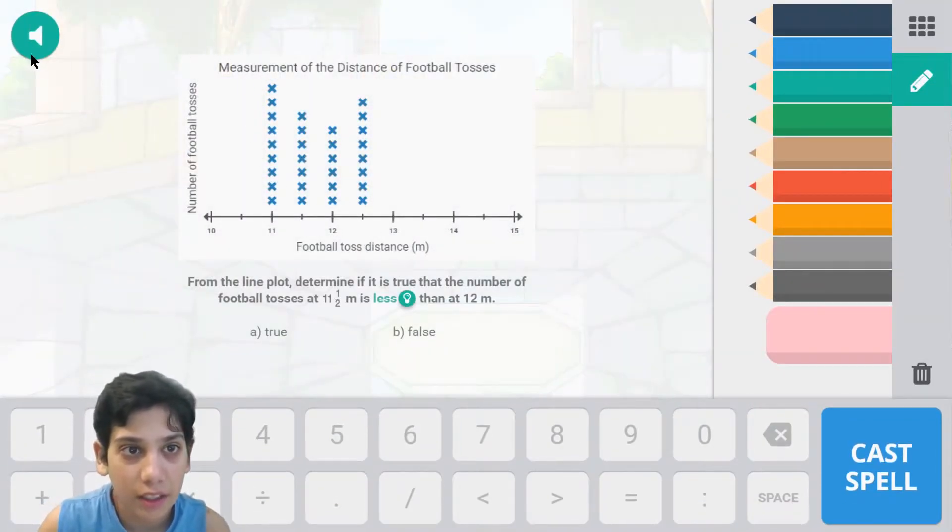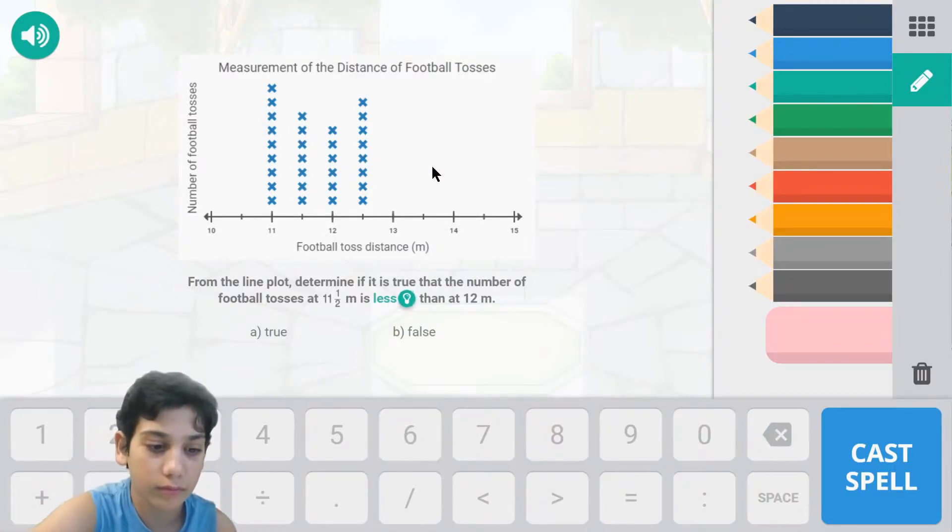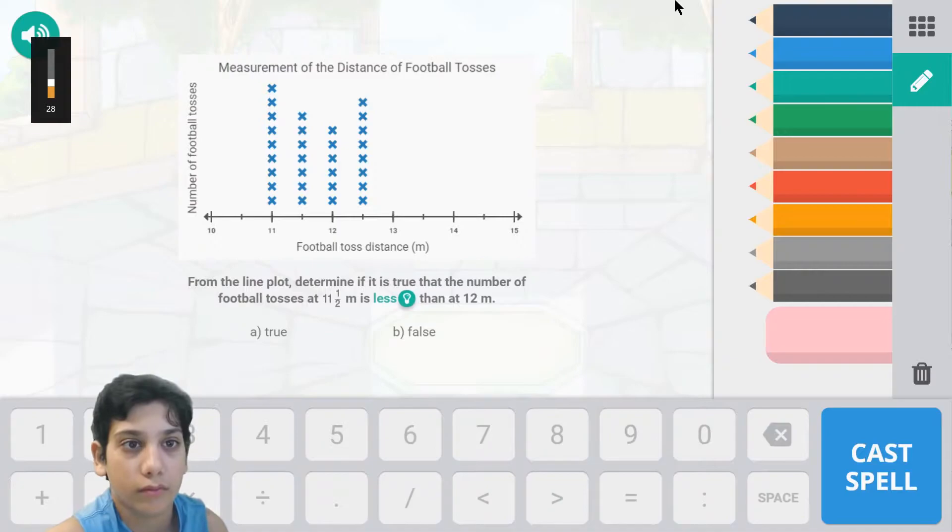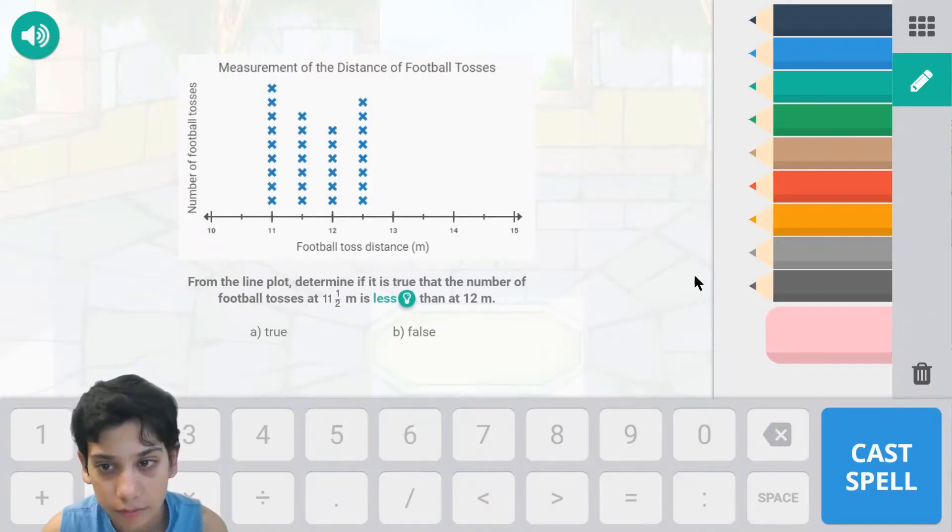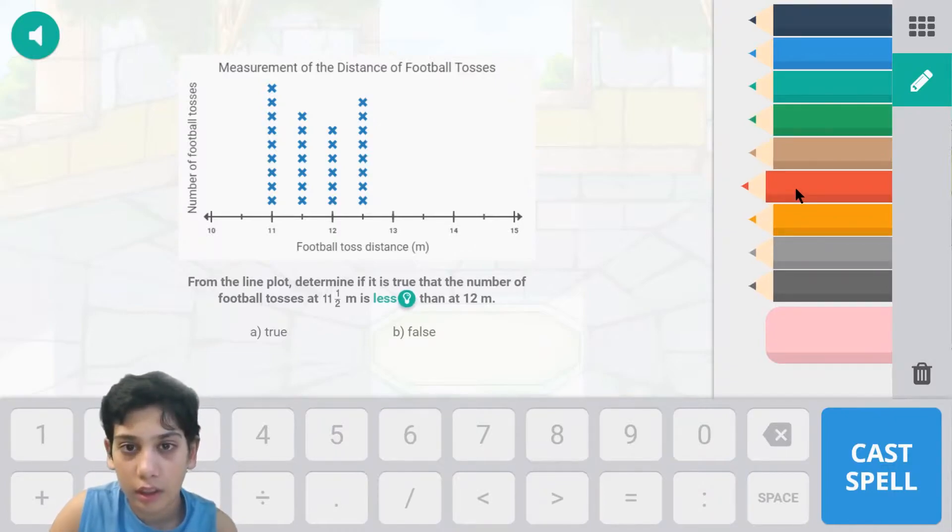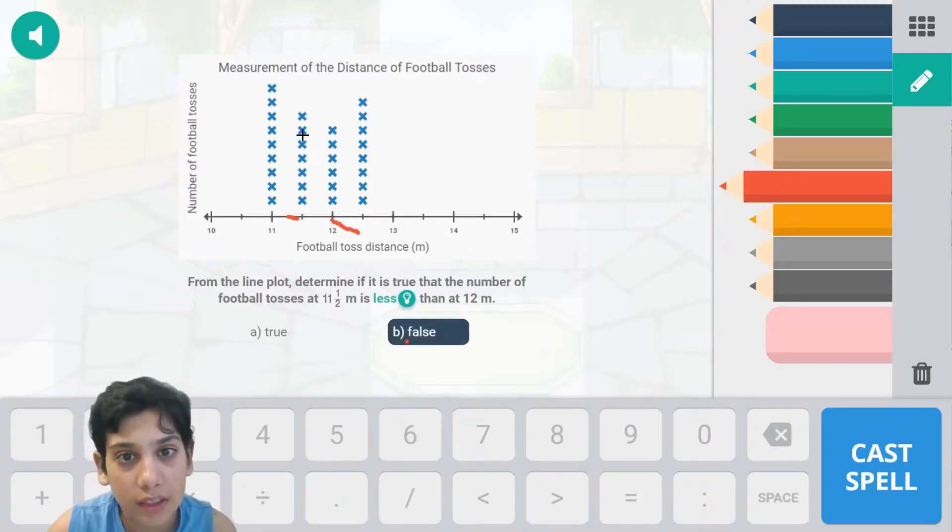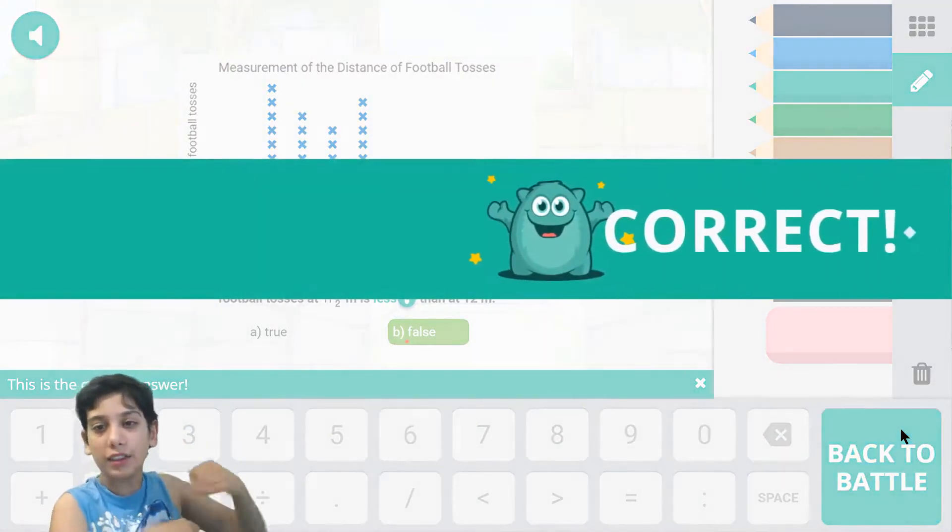Okay, so let's look at 11 and a half, which is right there, and 12 is right there. Now 11 and a half, this is false because 11 and a half is one greater than that. So the answer is false and cast spell.